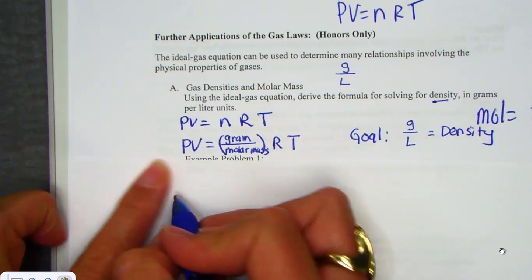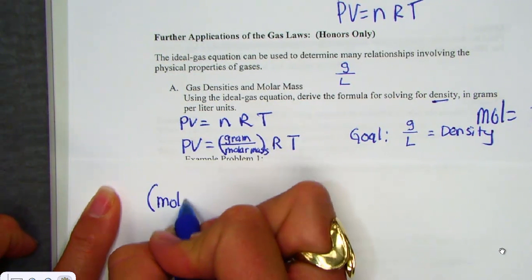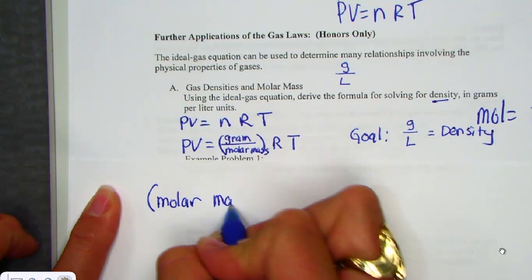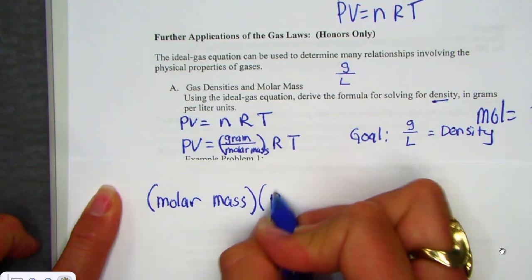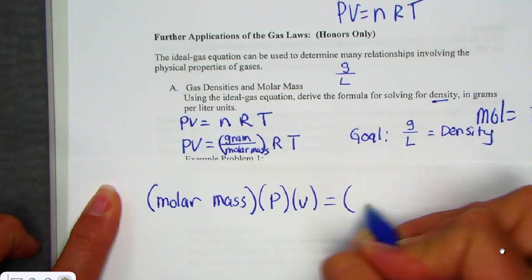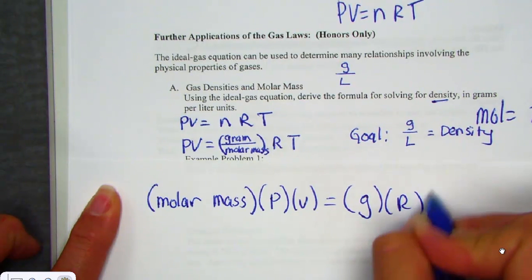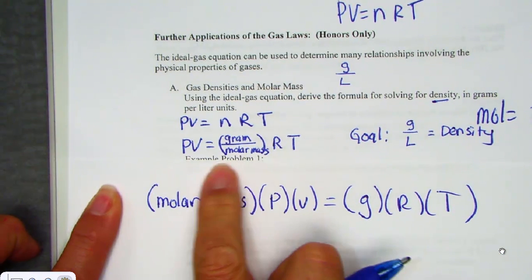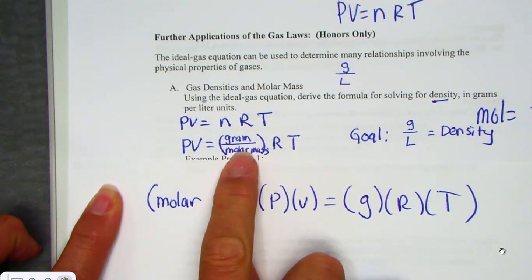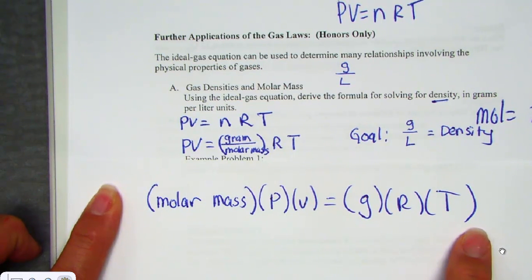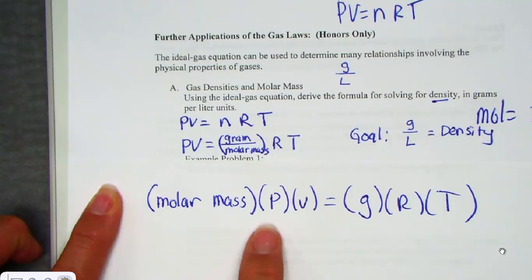So think about what our goal is. If I want to manipulate PV equals nRT to get gram per liter, because that's the very definition of what density is, we're going to just do a little manipulation of a PV nRT, so we end up with the left side, grams, which is measured in mass there, over volume, which is measured in a liter. So the first thing I'll do is just bring the molar mass variable up to the left-hand side.